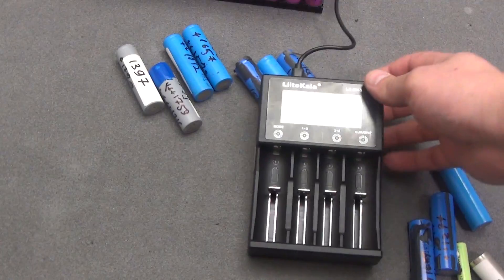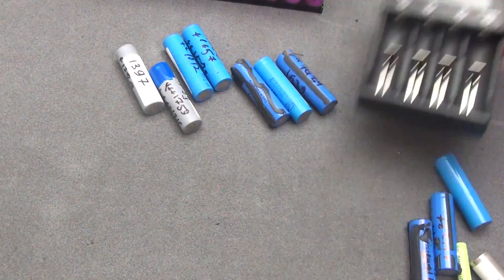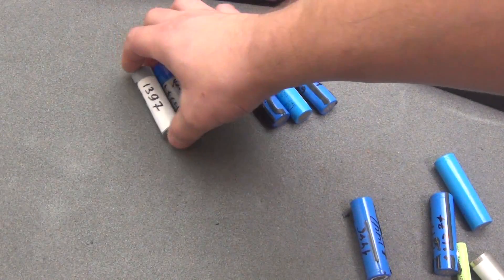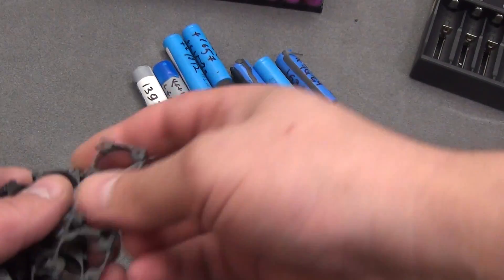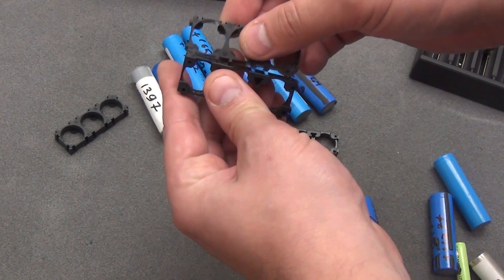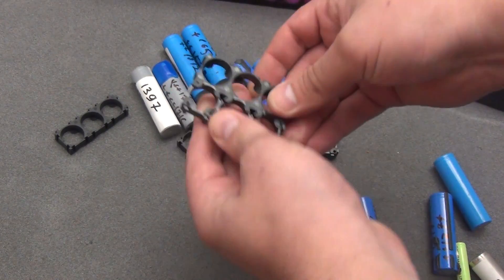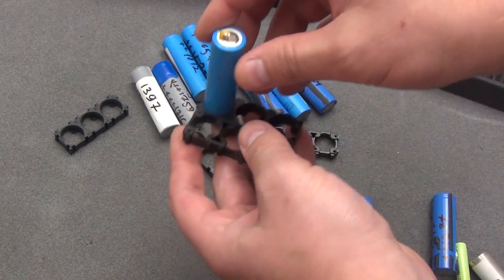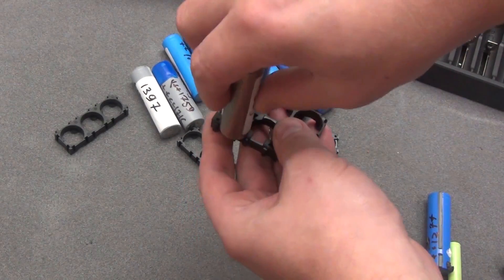That is, we need batteries. Next, we need a charger with a testing function so that we can check the residual capacity of our batteries. To assemble a beautiful assembly, we will need these plastic holders. They are inserted into each other, and accordingly the battery is held like this. And there is no contact between the batteries.